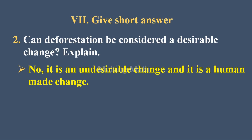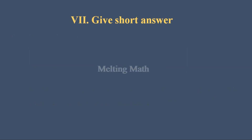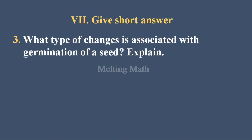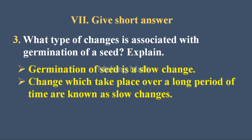Question two — can deforestation be considered a desirable change? No, it's an undesirable change and it is a human-made change. Deforestation leads to decreasing rainfall and also leads to global warming. In short, deforestation is harmful to our environment, so it comes under undesirable change. Question three — what type of change is associated with germination of a seed? Germination of a seed is a slow change — it takes place over a long period of time.